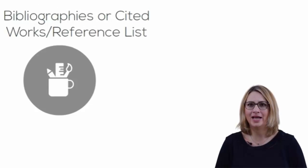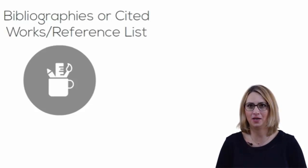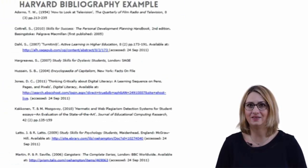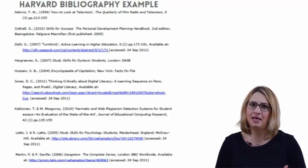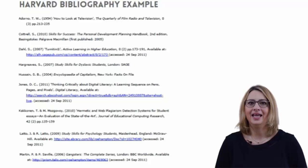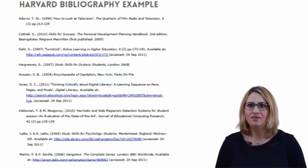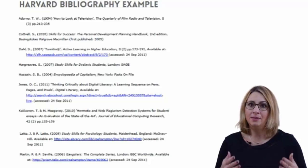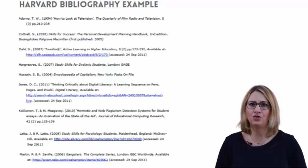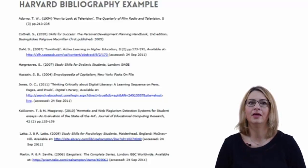Now let's look at how to create bibliographies or reference lists. At the end of your essay, you must provide a detailed list of every source you have used in compiling your work. Each entry must contain full bibliographic details set out in the designated Harvard style. The Harvard style guide gives examples of Harvard bibliography entries for many different types of sources. In the Harvard system, all of the information about the source is included in a bibliography at the end of the piece of work. A bibliography is a list of all the sources you have looked at, and can include sources you have read but not actually quoted from or paraphrased in the essay.